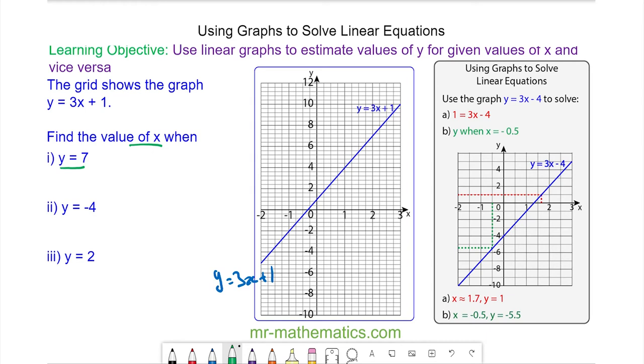So we draw a horizontal line now at y equals 7 to the blue line and a vertical line down to the x-axis and you can see that x is equal to 2.